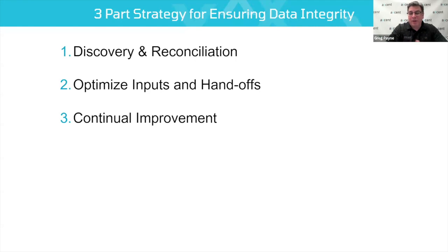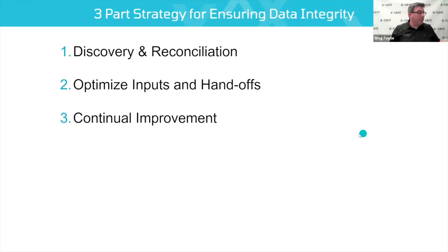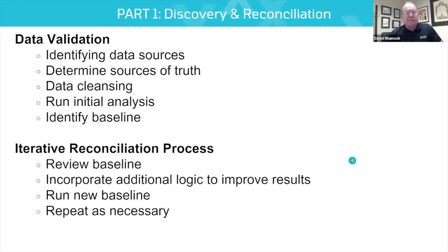Our three steps are: first, a discovery and reconciliation step; second, an optimization step focused on process — particularly inputs and handoffs; and third, a continual improvement quality step that you run post-project. Let's dig into each one. If you have questions on any of these three steps, please fire them away in the Q&A area.